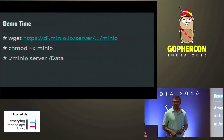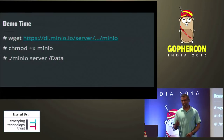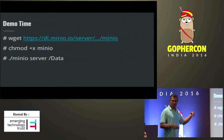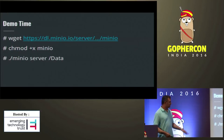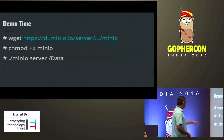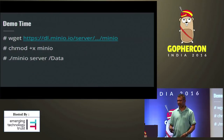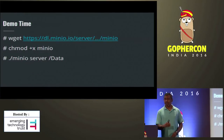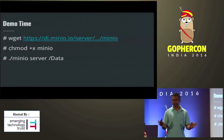Demo time. You just download the binary from minio.io — download the binary, chmod, and then start the server. The command is simply: minio server, and then you point to your data directory — it could be just your work folder, my documents, anything. The server starts and shows you a message with the access key and secret key, and tells you how to use it. That's pretty much it.